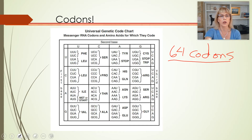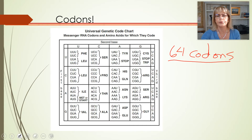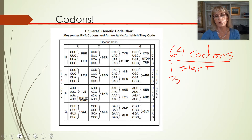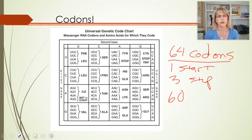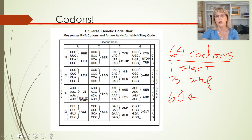UUU, UCU, ACC — 64 of them. One of them is for start and three are for stop, which leaves 60. If a committee was doing this, they would have said: great, 60 codons, 20 amino acids, three each, done. But that's not the way it happened.